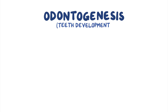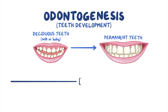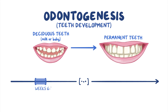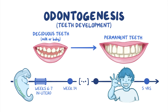Odontogenesis, or teeth development, is a process that includes the development of deciduous teeth, also called milk teeth or baby teeth, and permanent teeth. Deciduous teeth begin to develop during week 6 to 7 of intrauterine life, whereas development of permanent teeth begins during week 14 of intrauterine life and continues up to 5 years after birth.